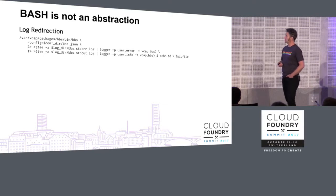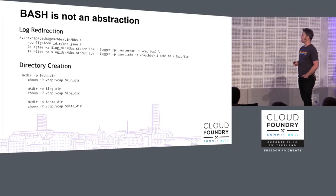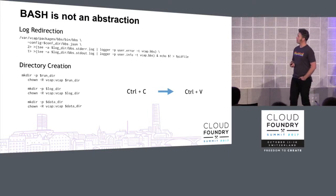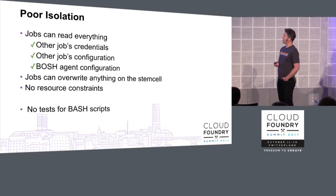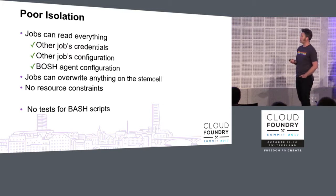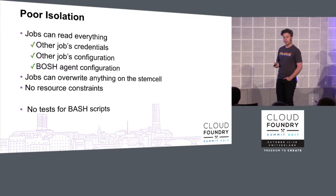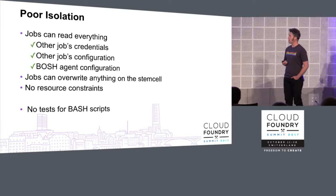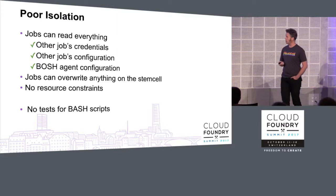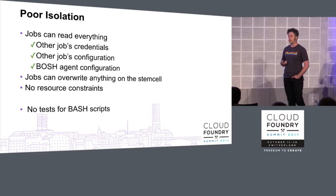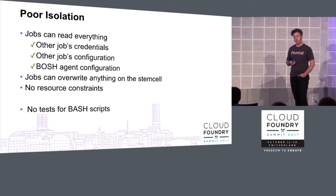Kind of makes people sad. Log redirection seems kind of simple, but you have to create all your directories, and that's also problematic — you copy and paste that into all of your releases. Also, poor isolation: jobs can read everything — other jobs' credentials, other jobs' configuration, the BOSH agent credentials and config. Jobs can overwrite anything on the stemcell; try replacing bash and see what happens. No resource constraints, and there are no tests for these bash scripts. There was a vulnerability where we had been passing user input for log lines through an exec in bash, which was less safe than we would have liked.